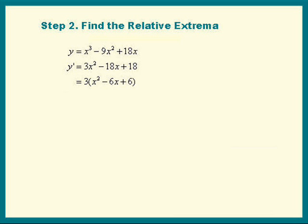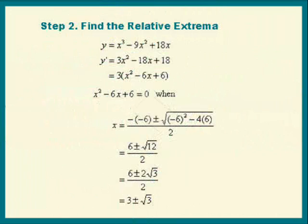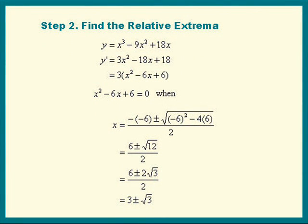We need the quadratic formula to factor this. I don't want to spend too much time on algebra so here's what we get. The result is we find that y' is equal to 0 at these two x values. We have two horizontal tangents there. These are called stationary points.